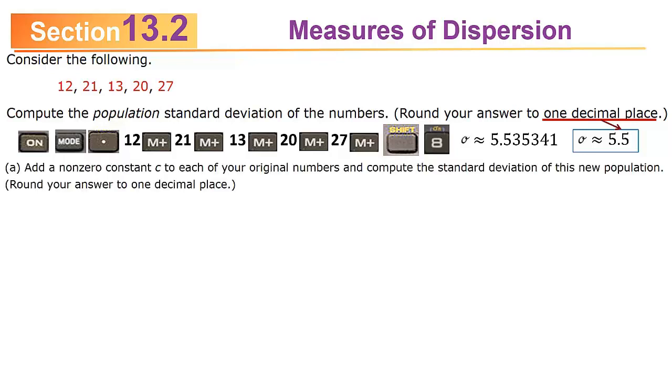Here's an additional question. Add a non-zero constant C to each of your original numbers and compute the standard deviation of this new population. Again, it's a population and we want to round to one decimal place. They're asking us to add a constant C that's not 0. Pick any number you like and add it to each data point and recalculate. I'll pick 2. You can pick 5, it doesn't matter. If I add 2 to 12, 2 to 21, 2 to 13, 2 to 20, 2 to 27, I get 14, 23, 15, 22, 29.